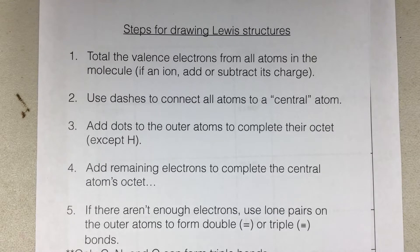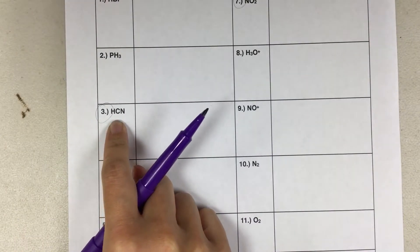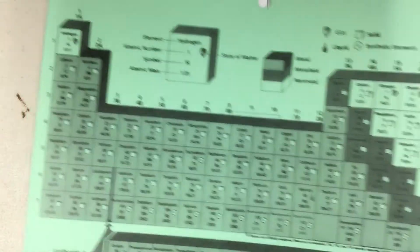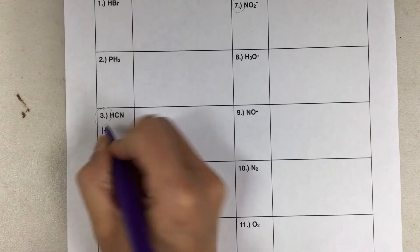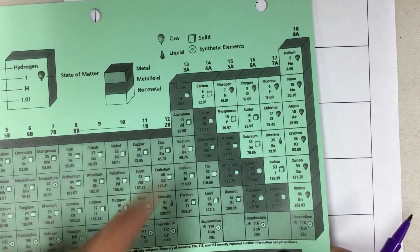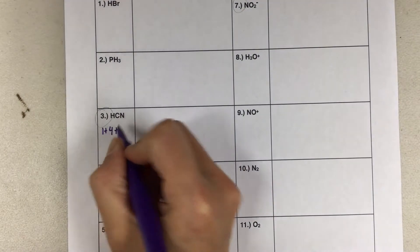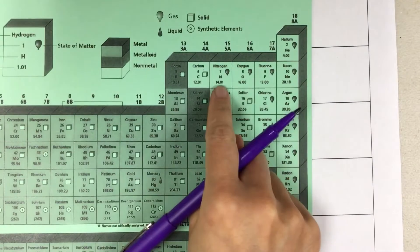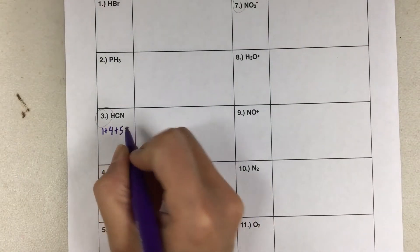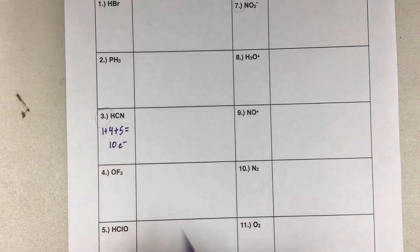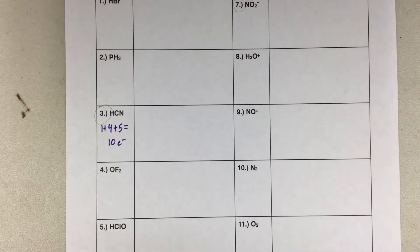You will also need, if you're new to Lewis Structures, these steps for reference, which are written down in your notes. I'll refer to these and use these steps as we go through each problem. So the first one we'll do is number three in your homework, HCN. The first step for drawing Lewis Structures is to total the number of valence electrons from all the atoms in the molecule.